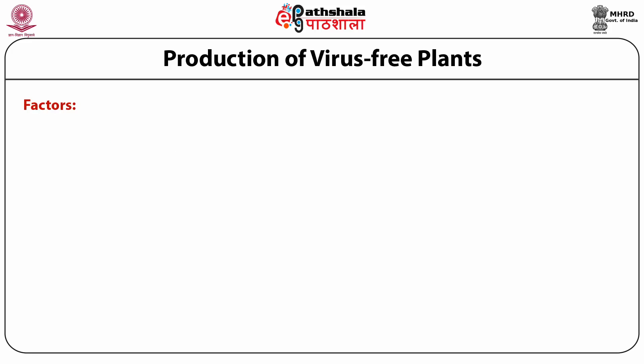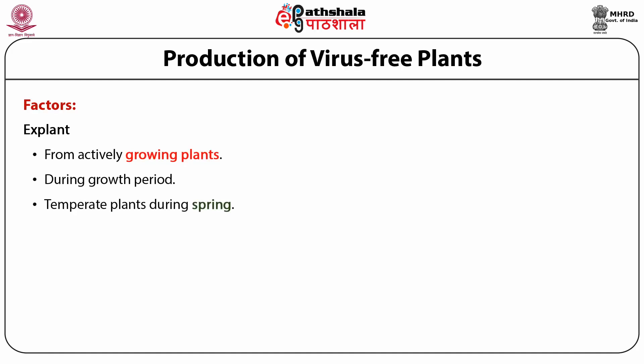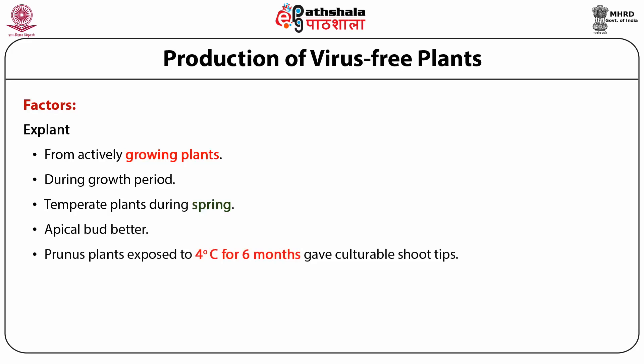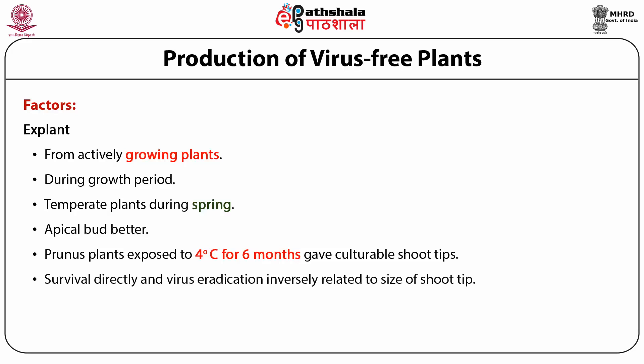The factors to be taken care of in shoot tip culture for virus eradication: First, the explant should be taken from actively growing plants during the growth period. In temperate plants such as apple and pears, it should be done during the spring. Apical meristems available on main shoots are preferred over lateral shoots. In Prunus, plants exposed to four degrees Celsius for six months before excising the shoot tip gave better culturable shoot tips. Survival and virus eradication are inversely related to the size of the shoot tip — a smaller shoot tip gives better chances of virus eradication but lower survival.